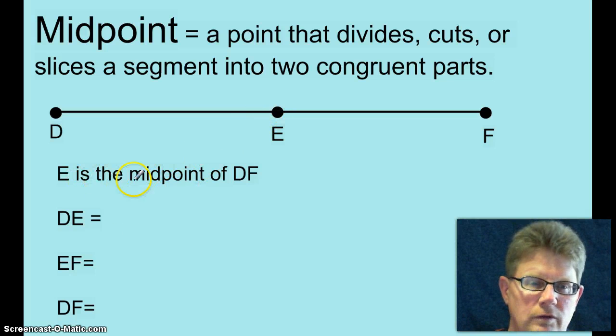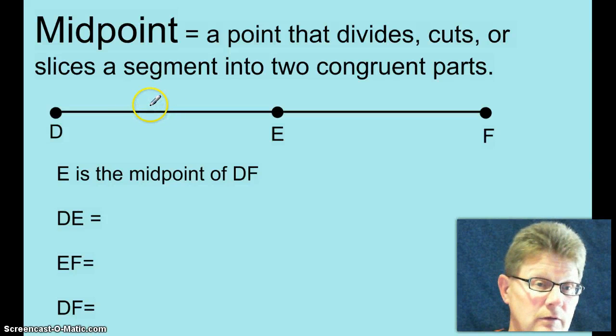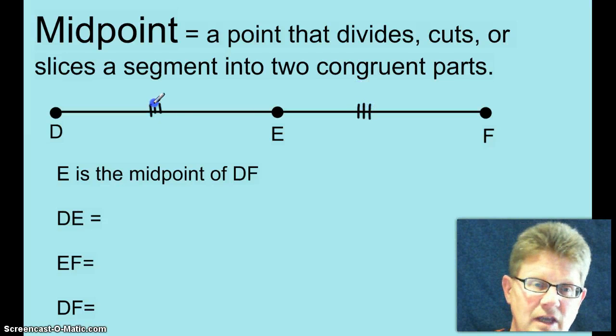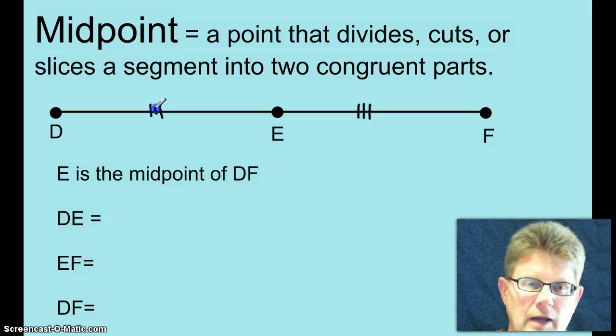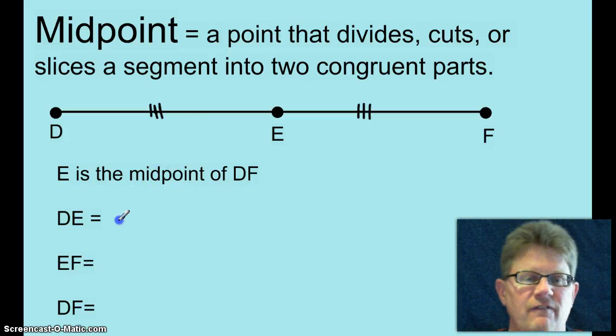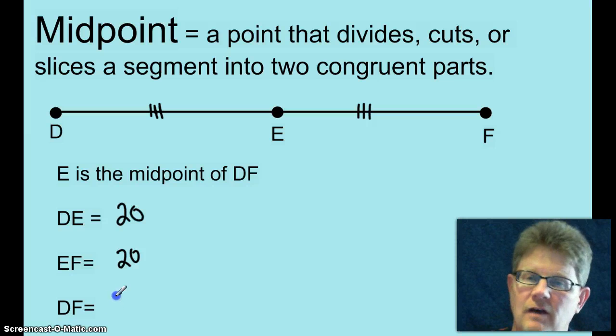Now, you're told that E is the midpoint of DF, so I could put tick marks, I could put three tick marks on each of them. I could put two, but just the same number of tick marks on each of them to show that those two segments are congruent. And I'm going to use three this time because I feel like it. If DF is 20, how big is EF? That's right, it's 20. How big is DF? You betcha, 40.